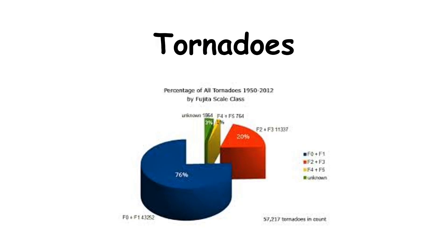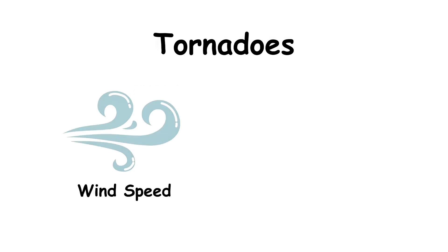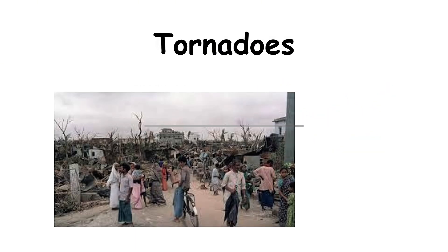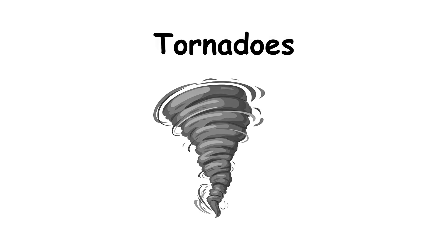To measure tornado strength, scientists use the Enhanced Fujita (EF) scale, which ranks tornadoes from EF0 — weak — to EF5 — incredibly destructive. This is based on wind speed and the damage left behind. The deadliest tornado in history was the Daulatpur–Saturia tornado in Bangladesh in 1989, which killed more than 1,300 people.